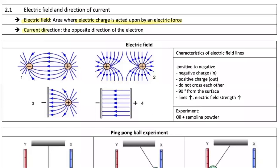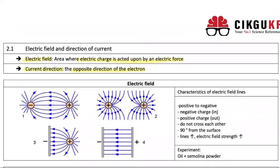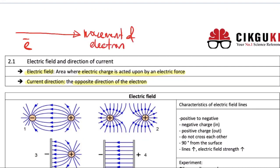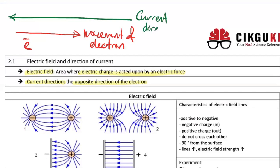Number two: what is the meaning of current direction? Current direction moves in the opposite direction of the electron. For example, if an electron is moving from left to right, there will be another movement going from right to left — that is the opposite of the electron's movement, and that is known as the current direction.